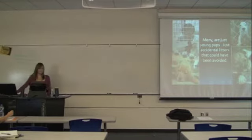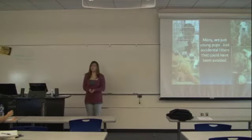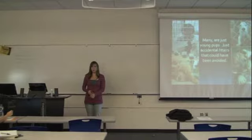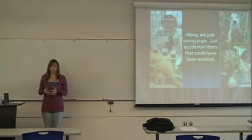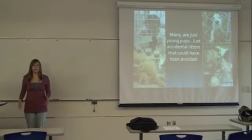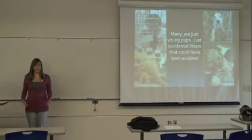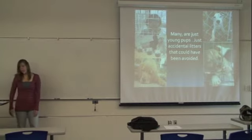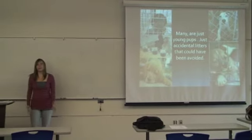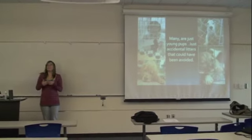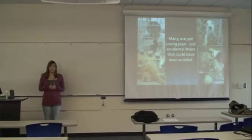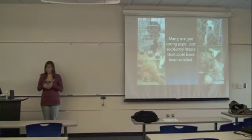The animals that are euthanized aren't just old or sick — some of them are young, some are old, some are big, some are small. There simply aren't enough homes for these animals. Spaying and neutering is one method to controlling pet overpopulation.